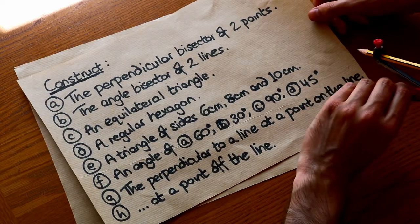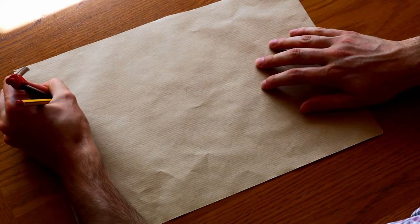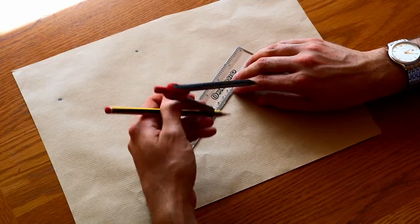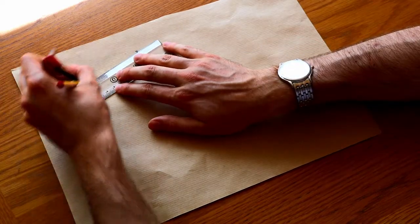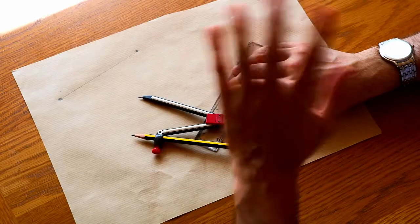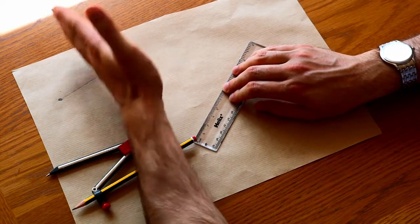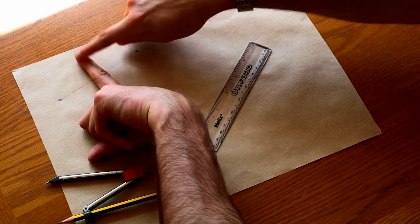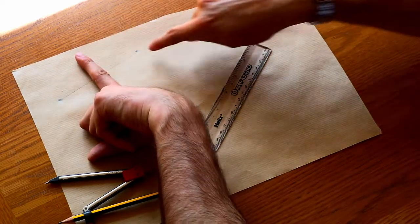We're going to first construct the perpendicular bisector of two points. Let's say I have two points here. Now what I mean by perpendicular bisector is that if I have these two points and I draw a line connecting them — to bisect something means to cut it in half — so we're going to cut it in half, and perpendicular means at right angles. So this perpendicular bisector is going to be at right angles to the line connecting the two points.